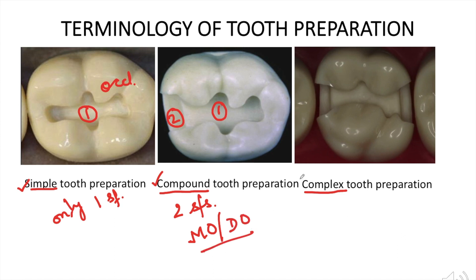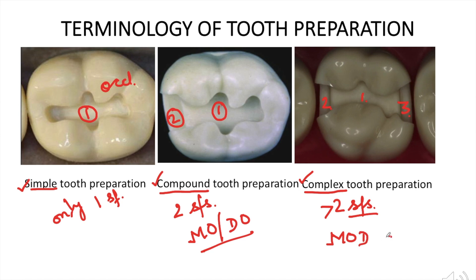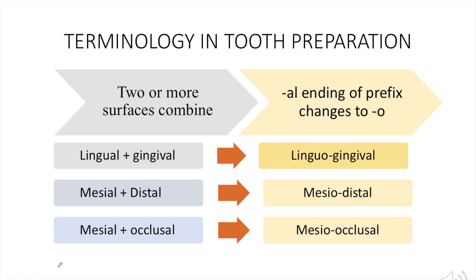The next is complex tooth preparation — a tooth preparation which involves more than two surfaces. For example, in this tooth preparation you can see the occlusal surface and both proximal surfaces, mesial and distal, are involved. So basically three surfaces are involved, which makes it a complex tooth preparation. Tooth preparation can thus be done on one, two, or more than two surfaces.